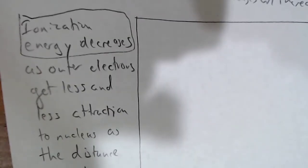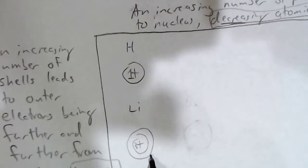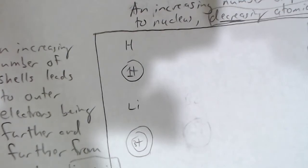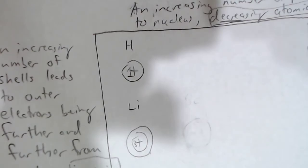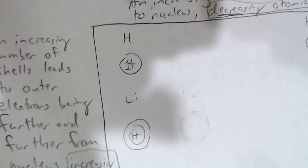Going down the periodic table, ionization energy will decrease. Going down, the outer electrons will be further and further from the nucleus — for example, the outer electrons around lithium are further from the nucleus than they were for hydrogen. According to Coulomb's law, the attraction between positive and negative charges is inversely related to distance. As distance increases, attraction decreases, so the energy required to pull those outer electrons off will also decrease.